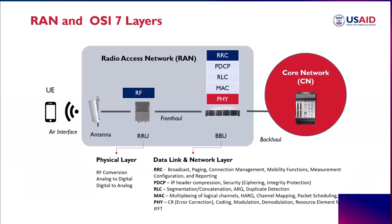Looking at the interconnection of radio access components: the user terminal is connected to the radio access network, which then connects to the core network. Focusing on the RAN, there is an antenna system — passive or active. The physical layer can be seen at the RRU, where RF conversion, modulation, and analog-to-digital conversion happen. The BBU holds the RRC, PDCP, RLC, MAC, and physical layer protocols.